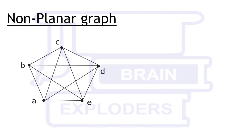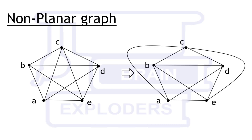But sometimes it's not possible to find any geometrical representation in which no two edges are intersecting. In this graph, if you try to find a representation in which no two edges intersect, you will not be able to find that. As you can see, I have tried to make another representation but there is one intersection of edges. So it is a non-planar graph.